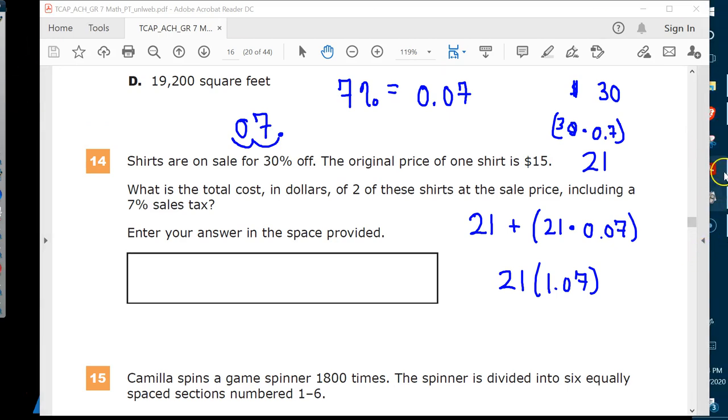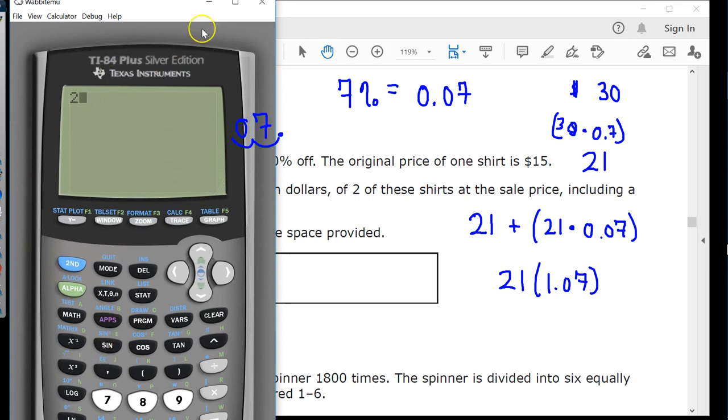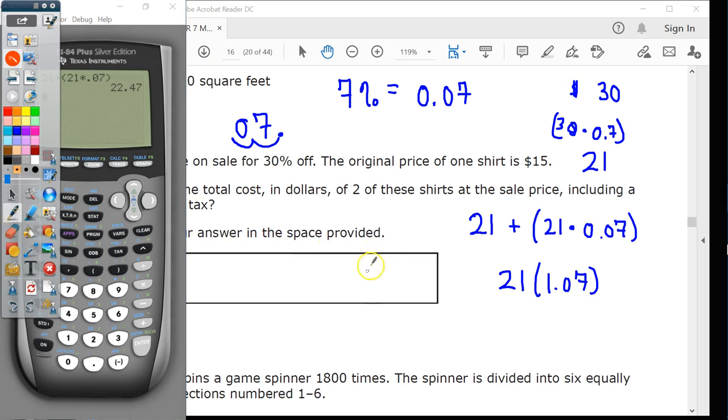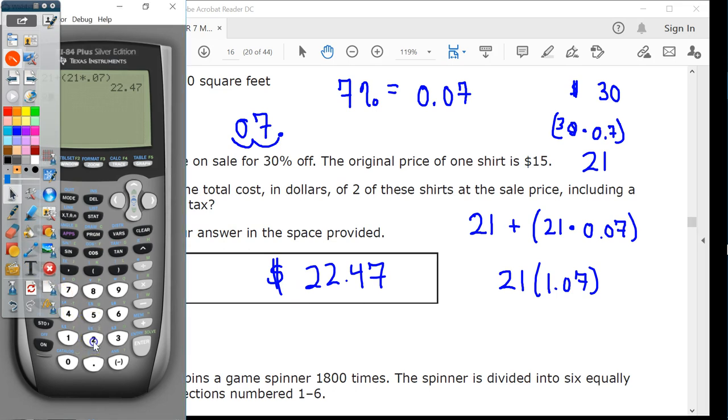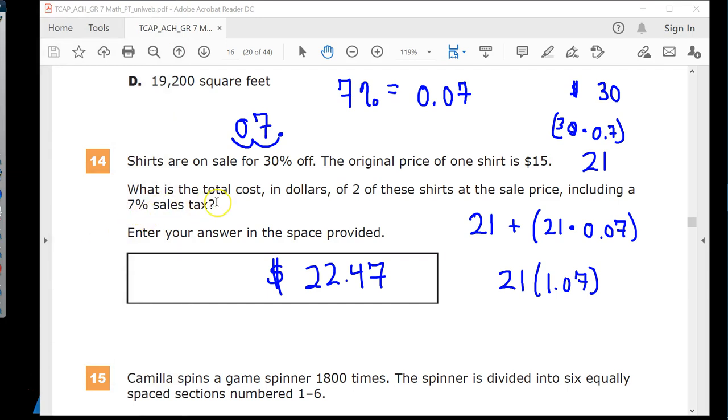If I can get my calculator back up here, I'd be in good shape. Here we are. So, 21 plus 21 times 0.07 gives me a final value of $22.47. Just to show you that other thing really does work out the way that I said it did. I hate making a proclamation and then not giving you any sort of proof. There it is. They want to know what's the total cost in dollars of two of these shirts at the sale price, including a 7% sales tax, $22.47. And that is it.